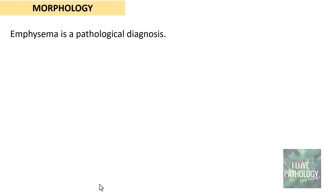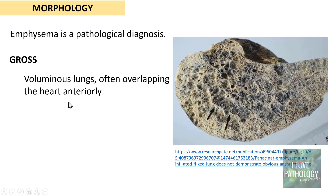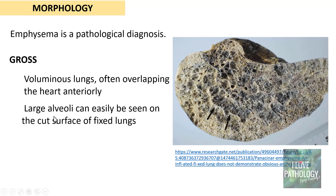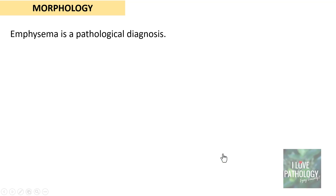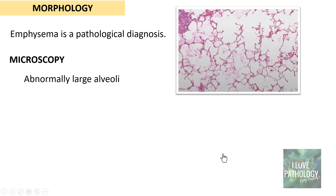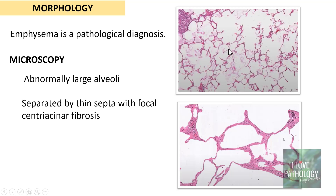Emphysema is by definition a pathological diagnosis. Grossly, the lungs are voluminous and often overlap the heart anteriorly. The alveoli are very large and dilated, visible on the cut surface of the fixed lung. Apical blebs or emphysematous bullae can also be seen, characteristic of irregular emphysema in advanced cases. Microscopically, you find abnormally large air spaces, thinning of the alveolar septa, and sometimes focal centriacinar fibrosis.